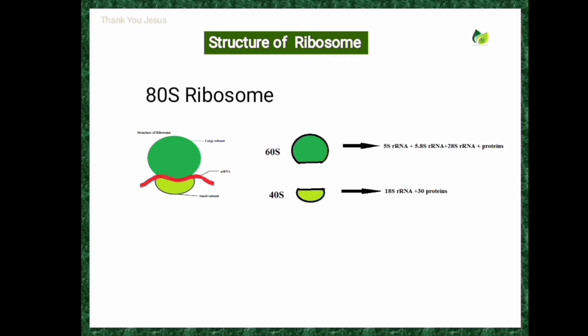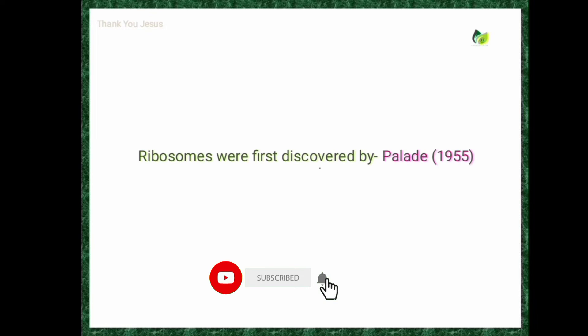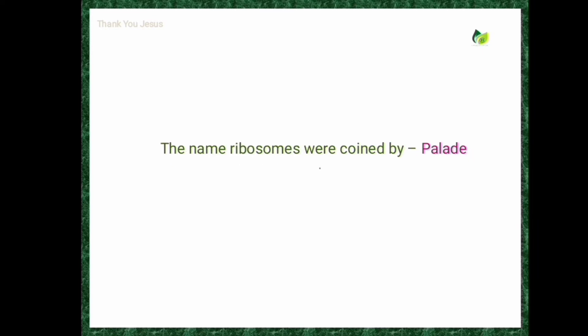Now for competitive bits: ribosomes were first discovered by Palade in the year 1955 — he observed them for the first time in animal cells. In plant cells, they were discovered by Robinson and Brown. The term 'ribosome' was coined by the scientist Palade, which is why they are also called Palade granules or sites of protein synthesis.